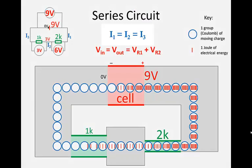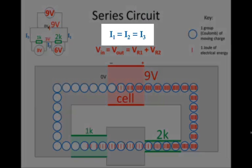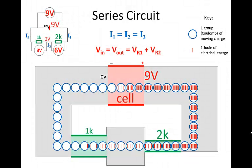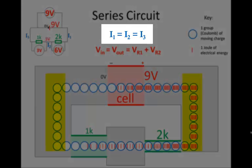However, the current strength is the same through all parts of the series circuit — I₁ equals I₂ equals I₃. They all move just as fast wherever they are in the circuit. There's no part of the circuit where they're moving faster than another. Even though charges have more energy at some places than others, they all move at the same rate.